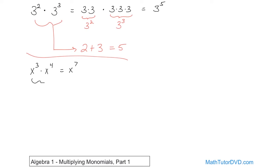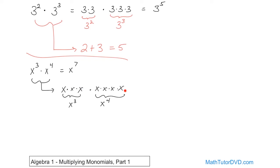But just to absolutely make sure it's clear in your head — what are you doing here? You have x times x times x. This is x cubed. And you're multiplying this quantity times x times x times x times x, which of course is x to the power of 4. So because they're all multiplied together, now you have 1, 2, 3, 4, 5, 6, 7 — and that's why it becomes x to the power of 7.